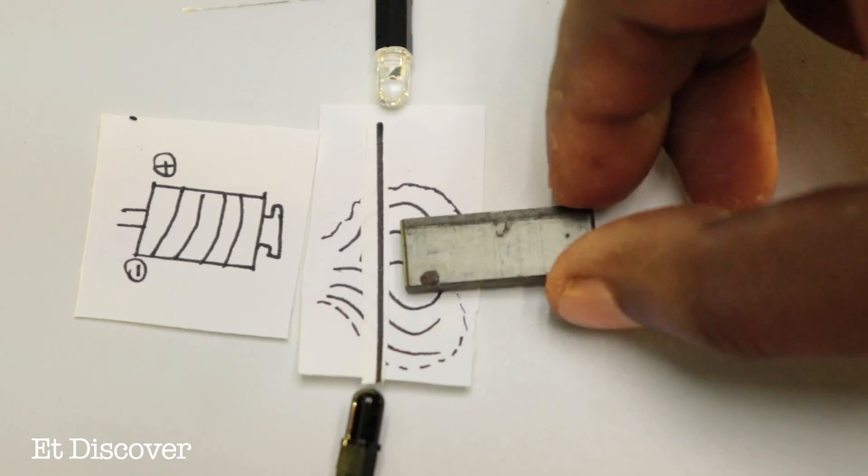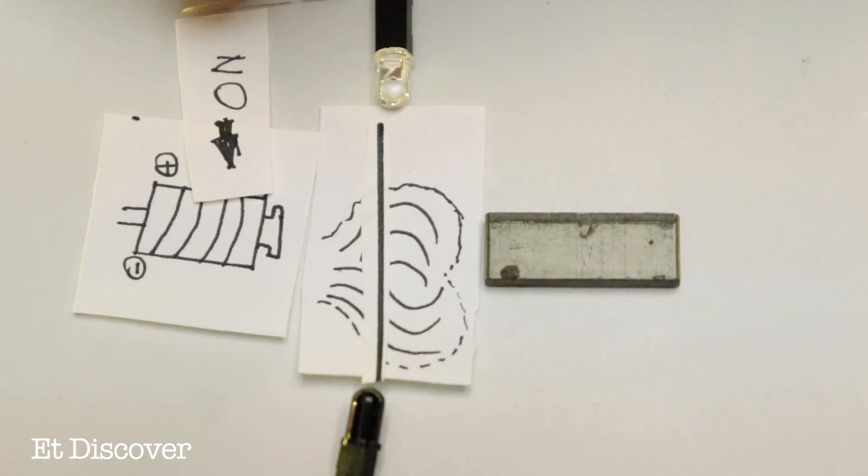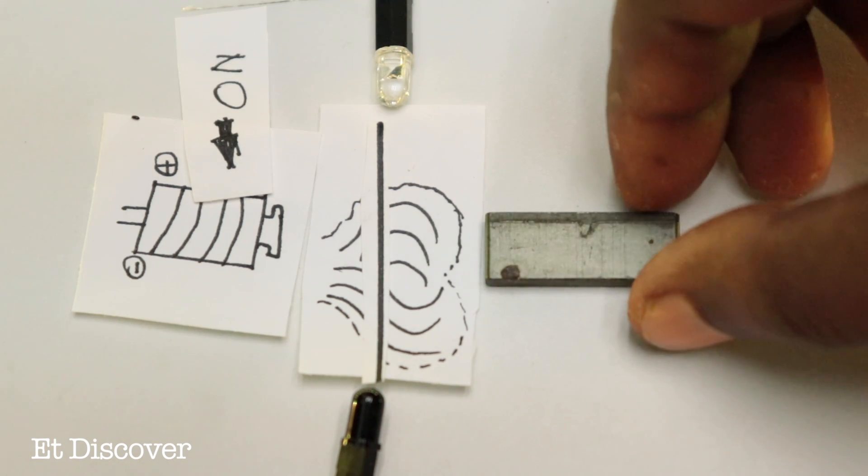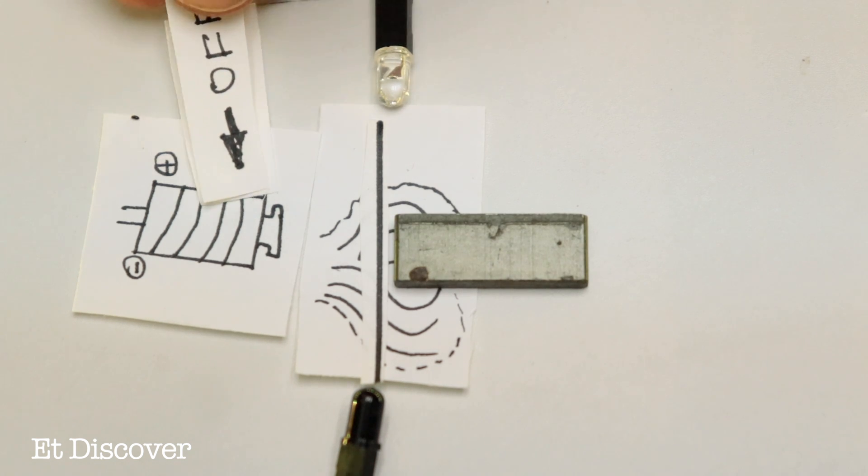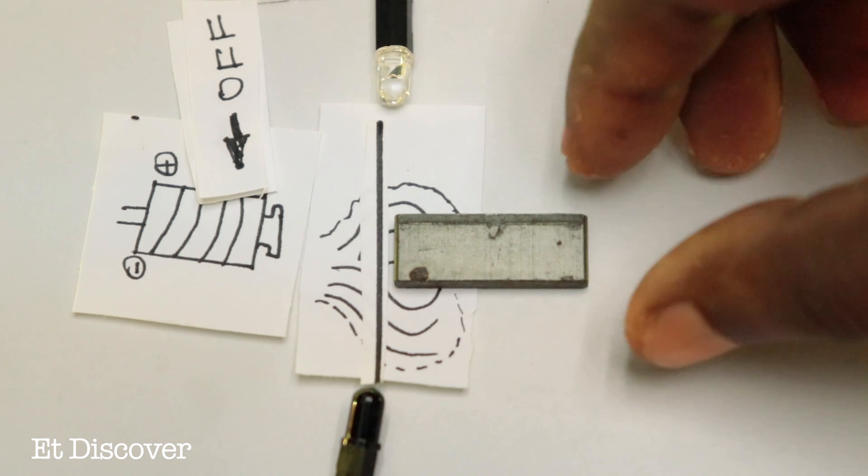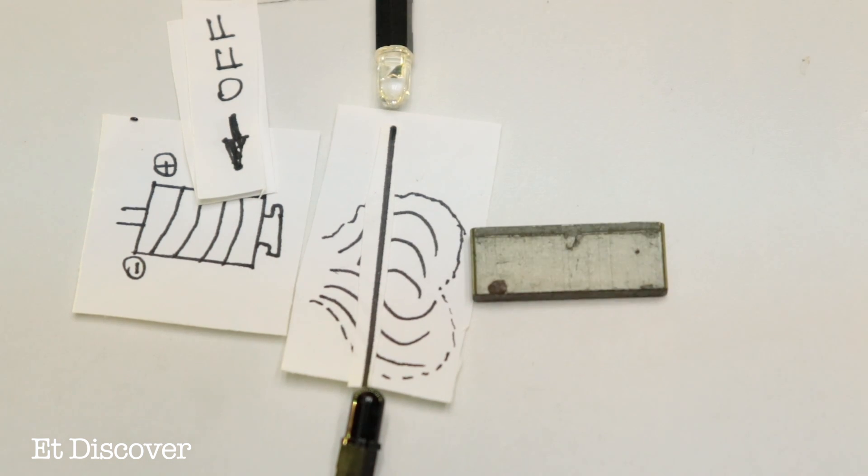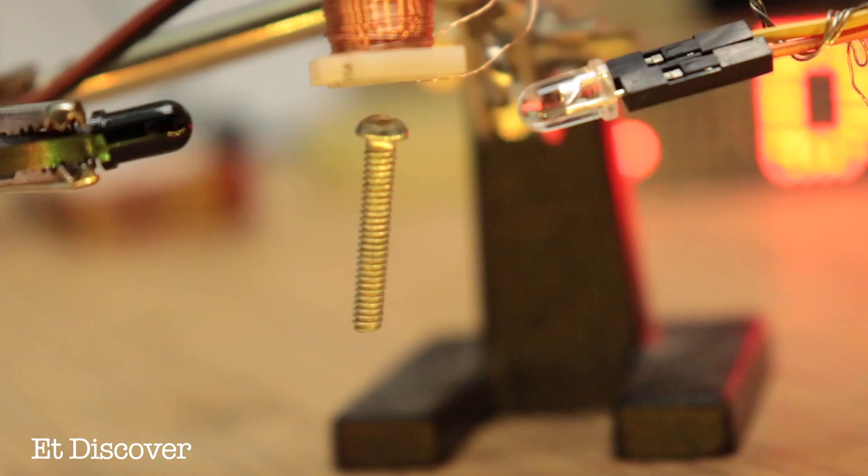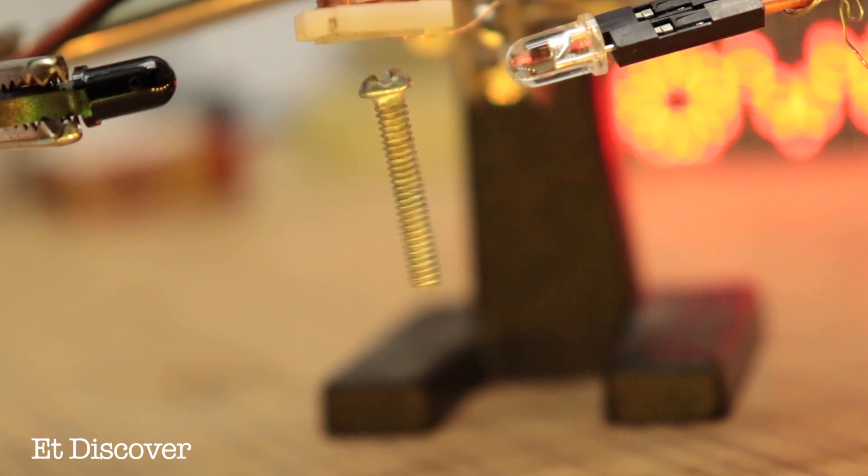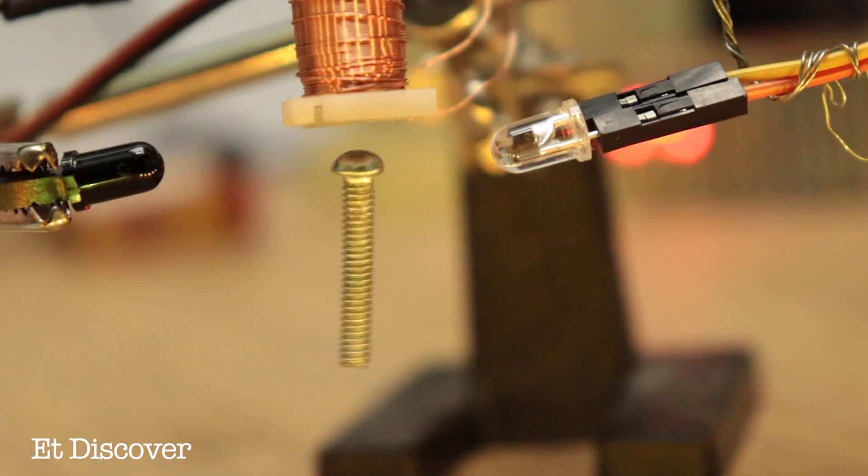Whenever the object tries to fall to the ground, the electromagnet will be activated and it will attract the object again. Then the electromagnet will stop due to the infrared connection breaking. Just then the object tries to fall again, and as a result the electromagnet will be activated again. This process will continue, and as a result the object will remain hanging.